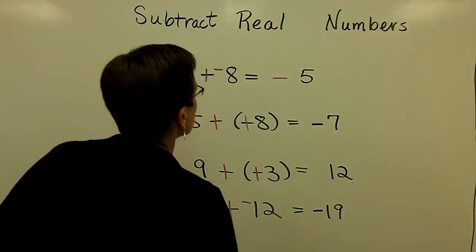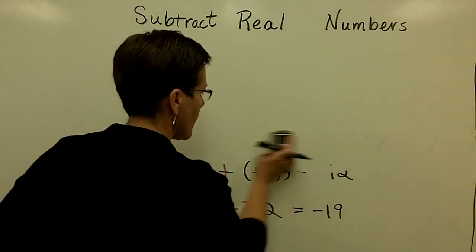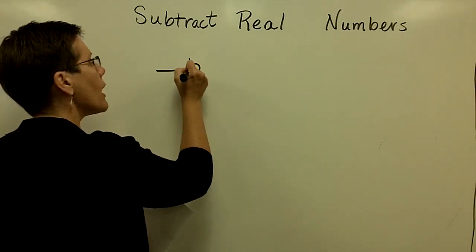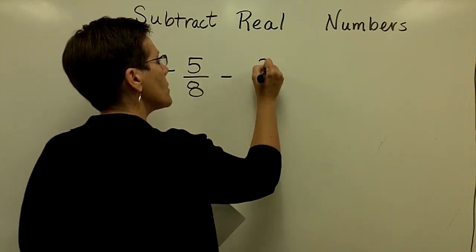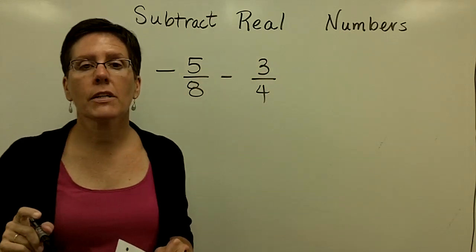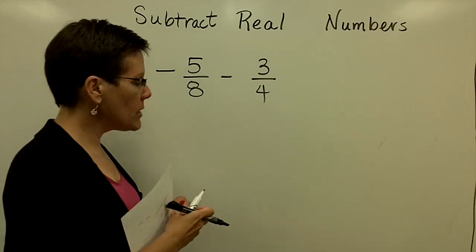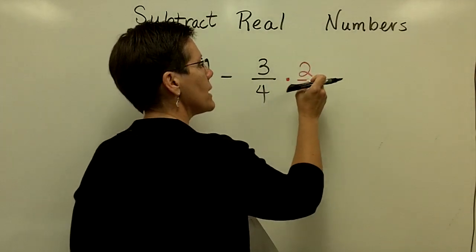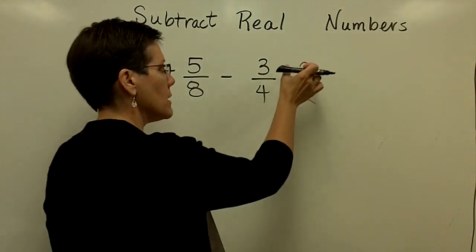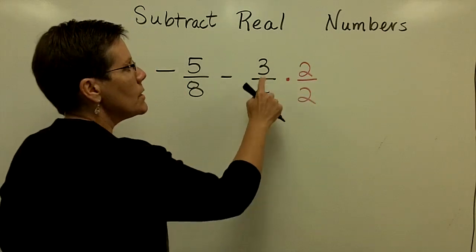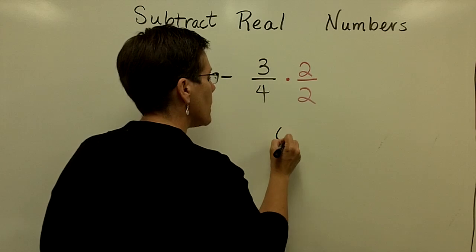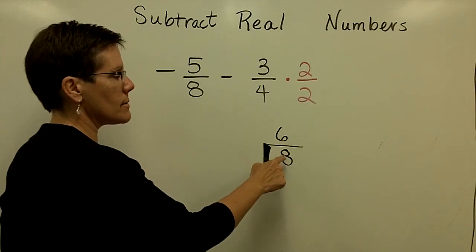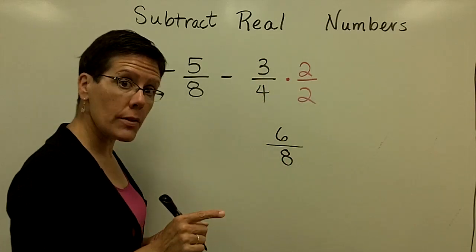Let's now do a problem with fractions and signs. A negative 5 eighths minus 3 fourths. These two fractions have a common denominator of 8. All that is required of me is to make that 4 become an 8 by multiplying it by 2. And in other words, 2 over 2 or a value of 1. So this 3 times 2 in that numerator will be a 6, and the 4 times 2 in the denominator is 8. Again, remember that 6 eighths is an equivalent fraction to 3 fourths.